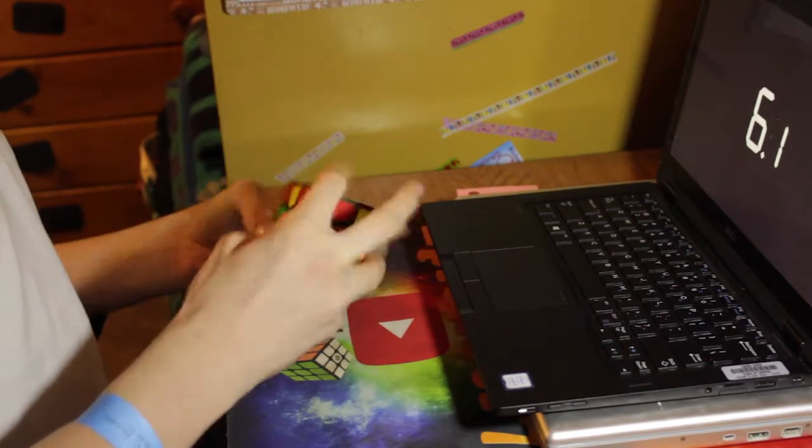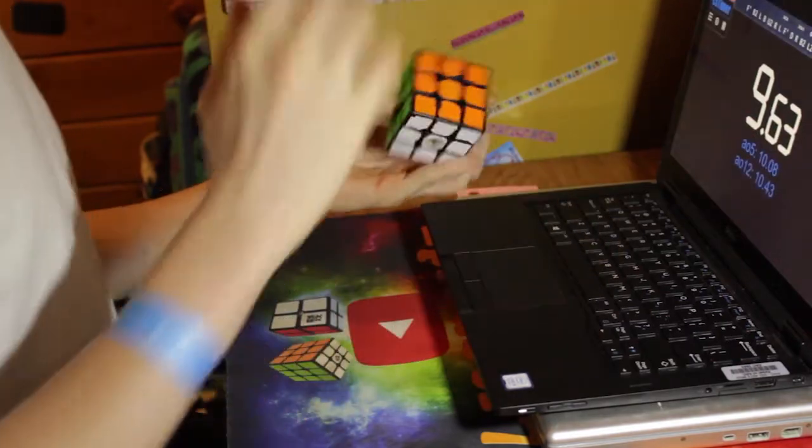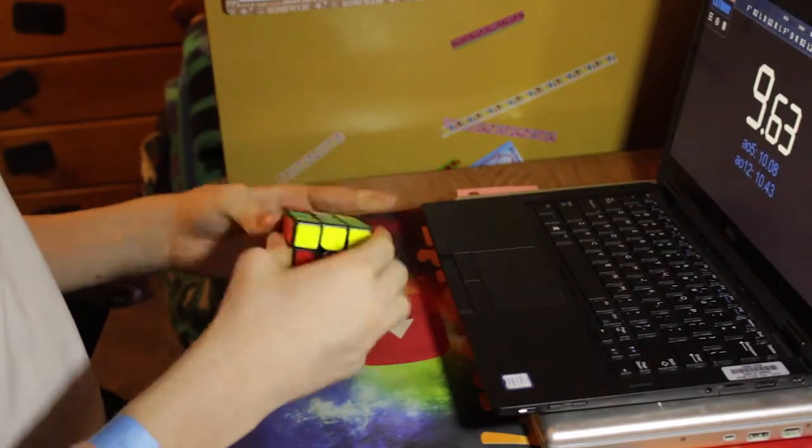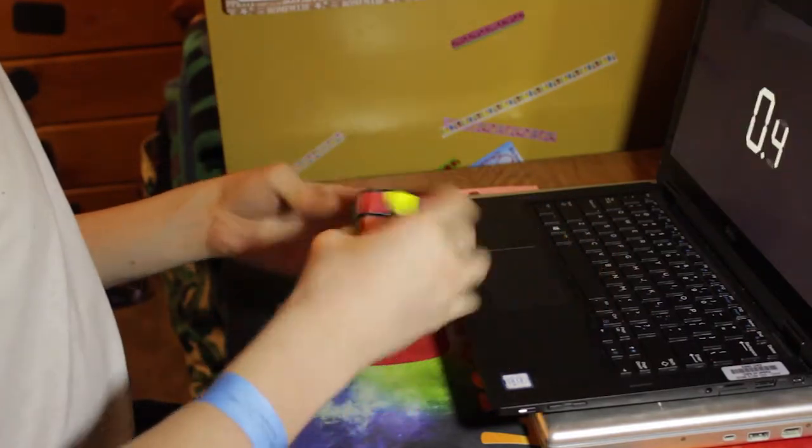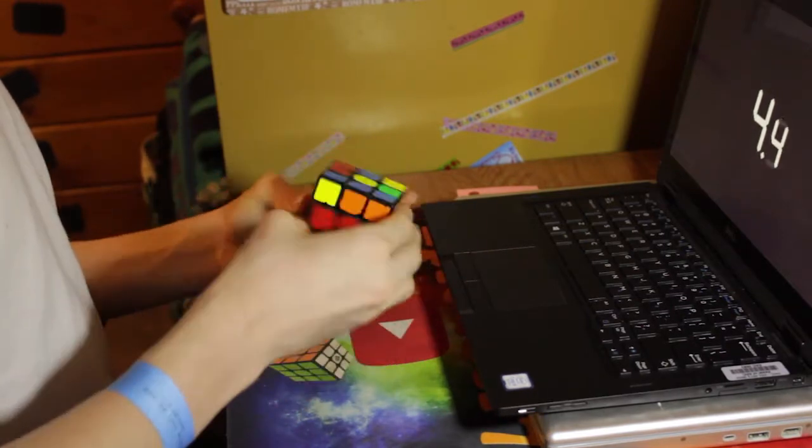For now, this has been my review on the YuXin Little Magic M, in my opinion, the best bang for your buck magnetic cube out there. If you'd like to pick this up, there'll be a link to it from speedcube.com.au in the description, and I'll see you in the next one. Bye!